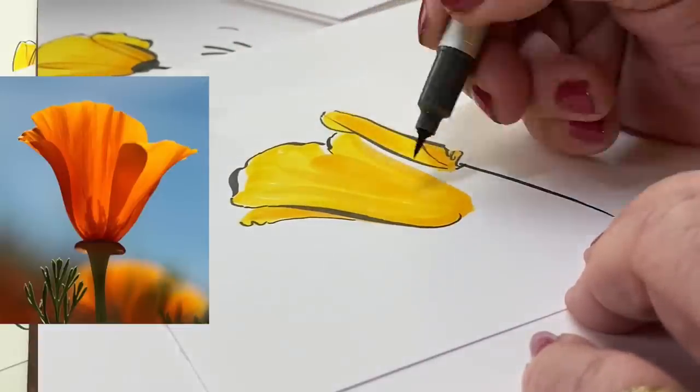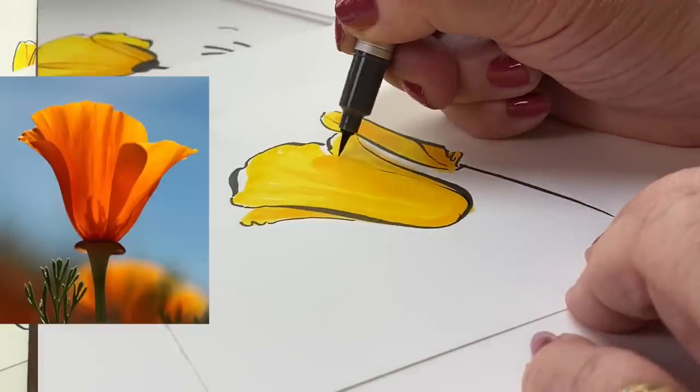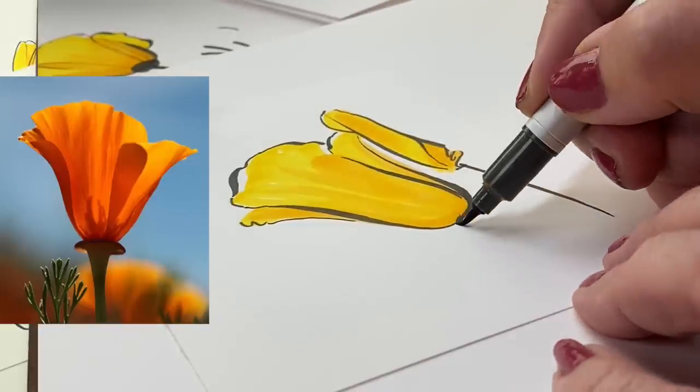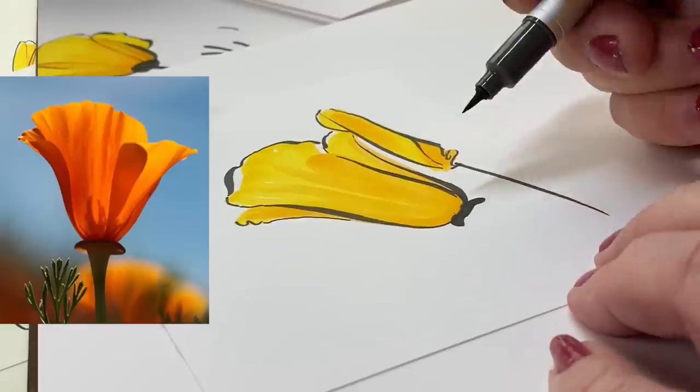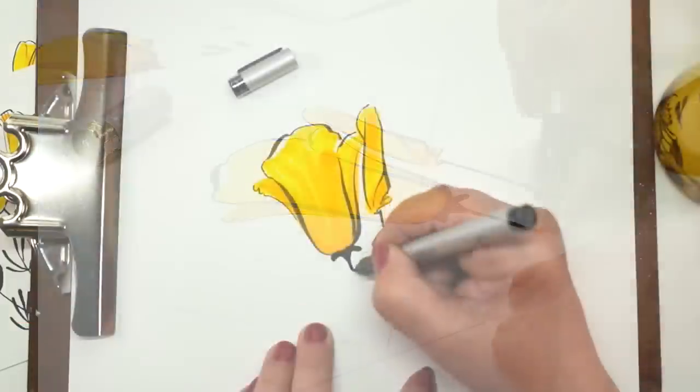But once you get the hang of using a brush marker to make really soft lines like this, it's kind of addictive to start doing this sort of thing. So I'm just going to warn you ahead of time. You might not need to buy stamps if you learn how to do this because you can try your own flowers.